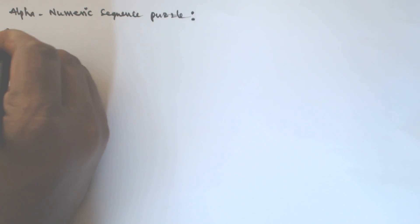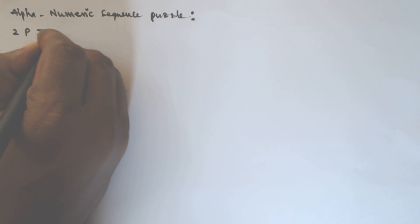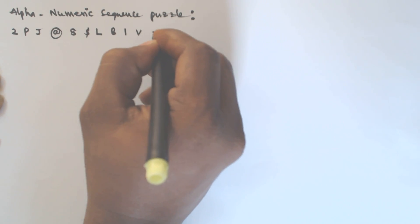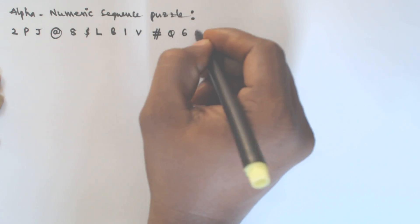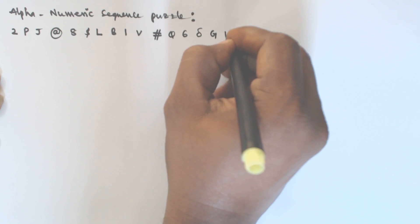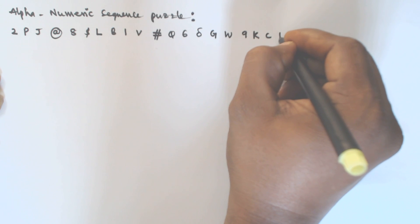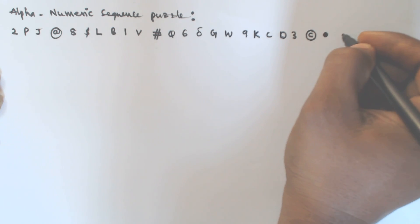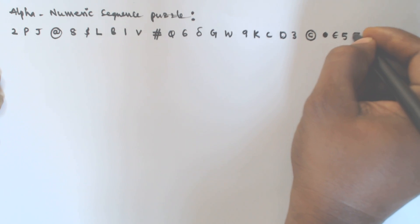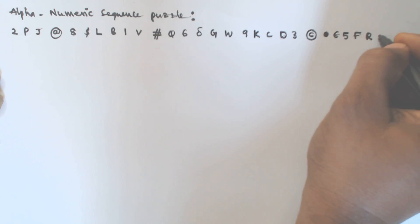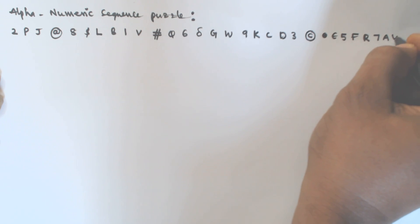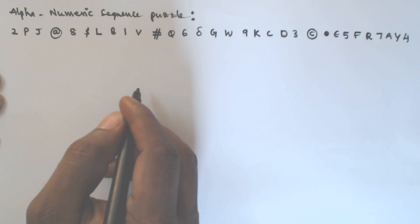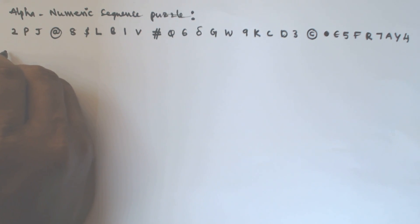Let us consider a sequence like this: 2 P J @ H $ L B 1 V # Q 6 γ G W 9 K C D 3 © . € 5 F R 7 A Y 4. These are the alphanumeric sequences given, and based on this the questions are asked.